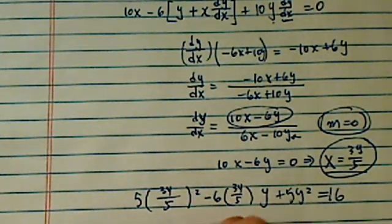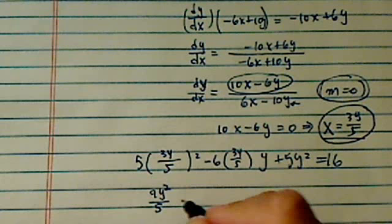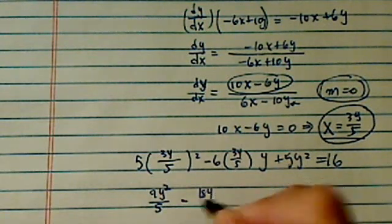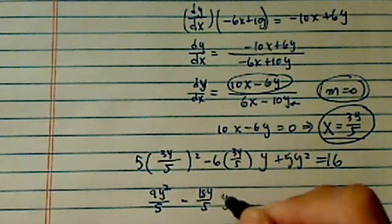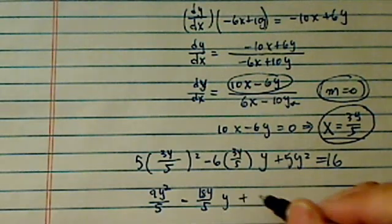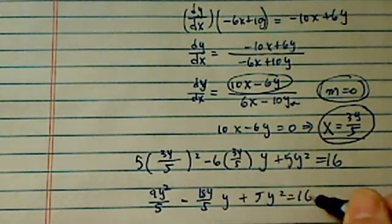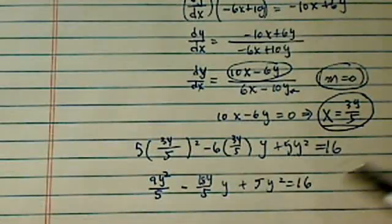I have 9y squared over 5 minus 18y over 5y, and then plus 5y squared, equal to 16. Let's clean this up a little bit.